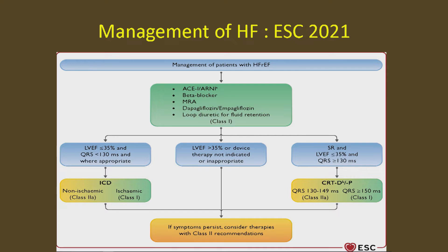If the ejection fraction is less than 35% and QRS duration less than 130 milliseconds, ICD is indicated. For non-ischemic cardiomyopathy, this is Class 2A; if it is ischemic, it is Class 1. If ejection fraction is more than 35%, device therapy is not indicated, and we have to go for Class 2 recommendation.